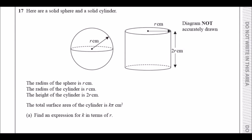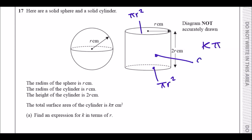Number 17: we're given a solid sphere and a solid cylinder. The radius of both is r cm, but the height of the cylinder is 2r cm — twice the radius. The total surface area of the cylinder equals k times pi. The surface area consists of three parts: the circular base (πr²), the circular top (πr²), and the curved surface area, which is 2πr times the height.